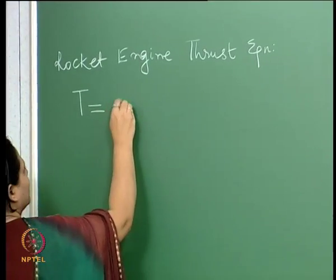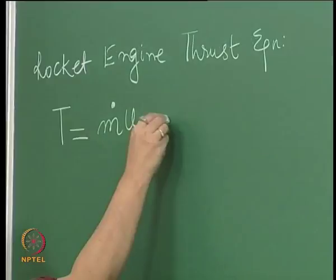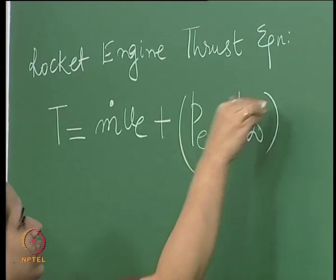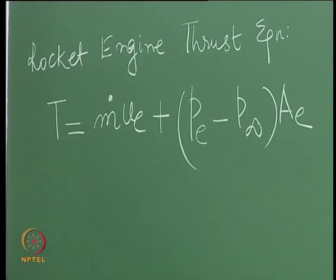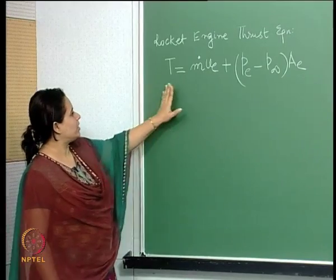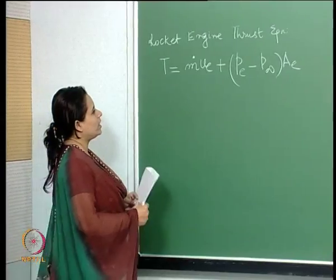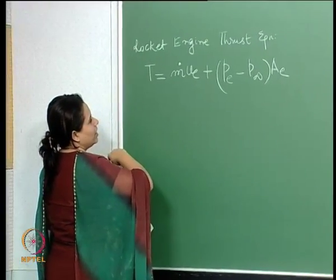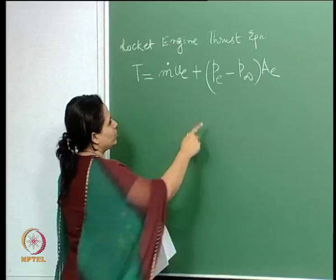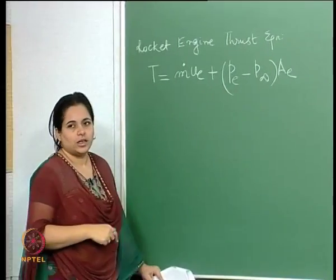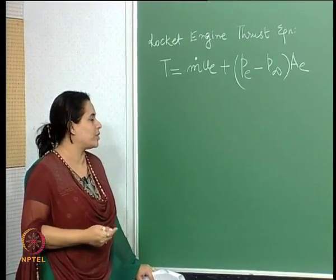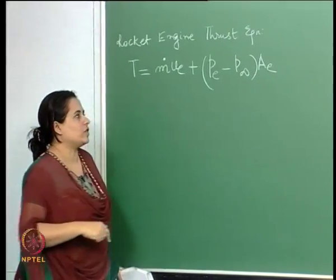This is thrust. The thrust generated by the rocket engine is given by this equation. Here, m-dot is the mass flow rate, u_e is the exit gas velocity, P_e is the exit pressure, P_infinity is the ambient atmospheric pressure or free stream pressure, and A_e is the area of the nozzle at the exit.